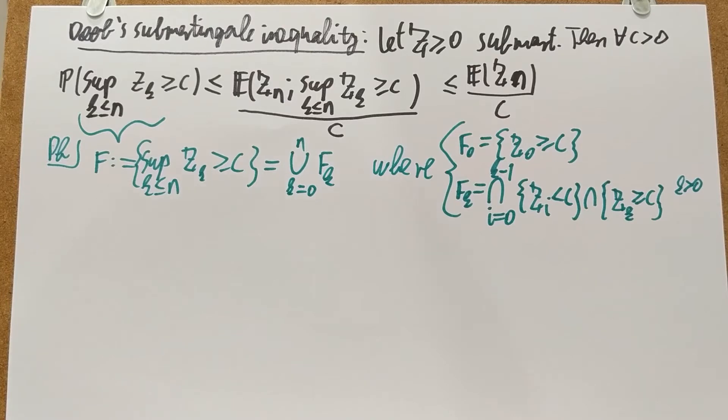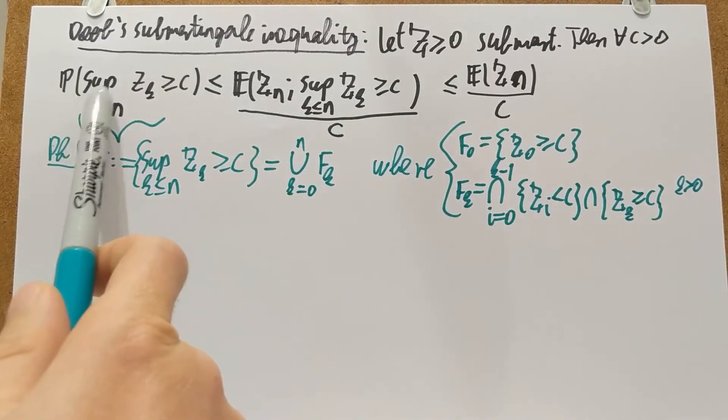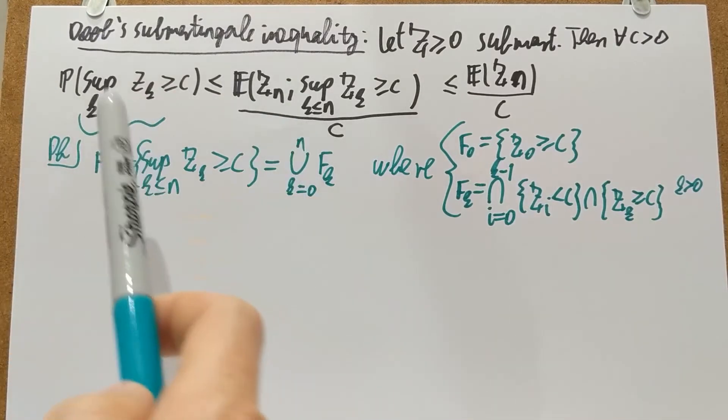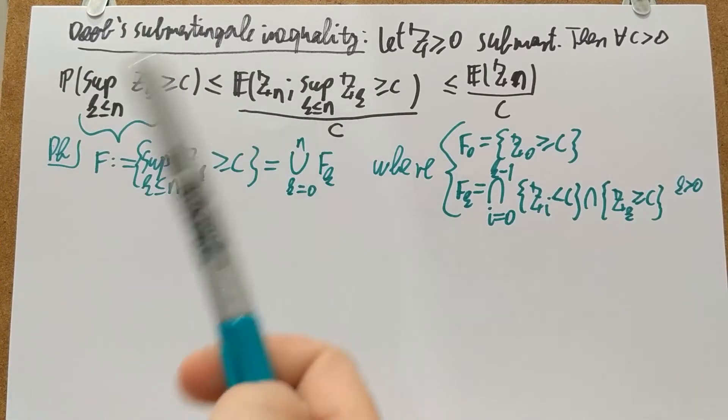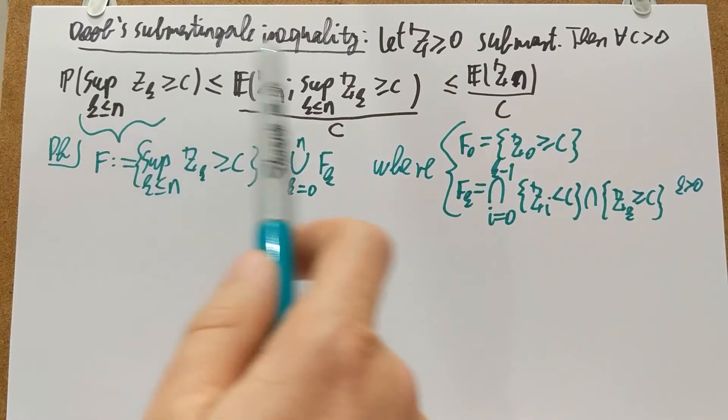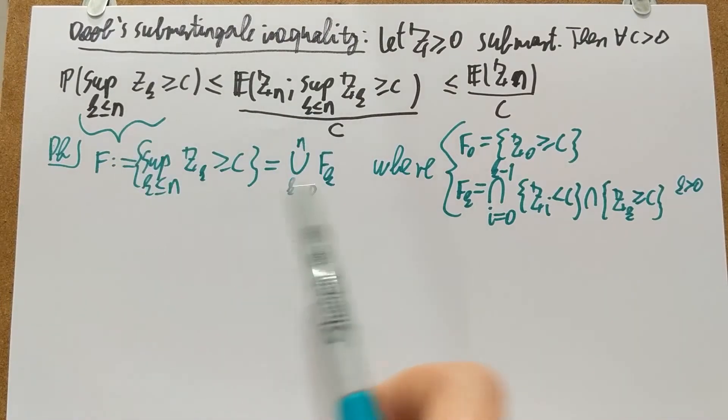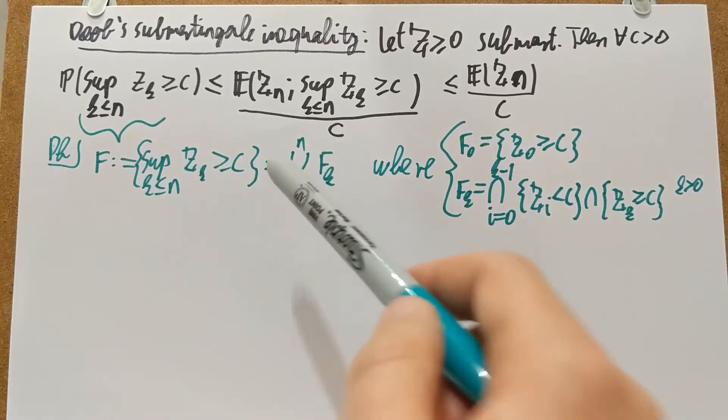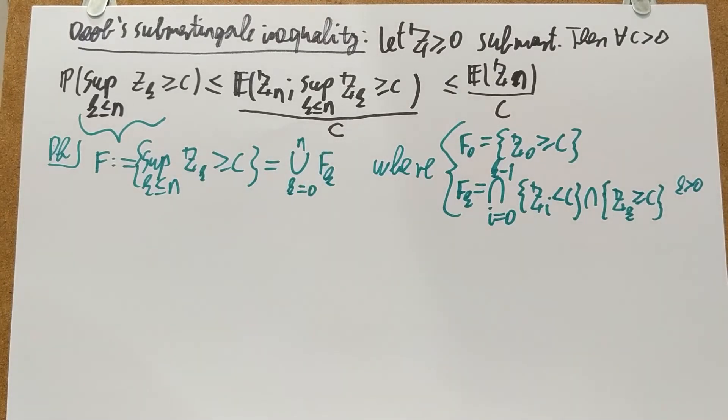Just a small remark. I am using supremum because this theorem generalizes to continuous time, where you really do need to use supremum. But in fact, it's just the supremum of finitely many terms. So I could as well write here maximums for the discrete case. Traditionally, we write it as supremum because it's true in continuous time. But for this discrete setup we have in this unit, I could easily just replace this by maximums.